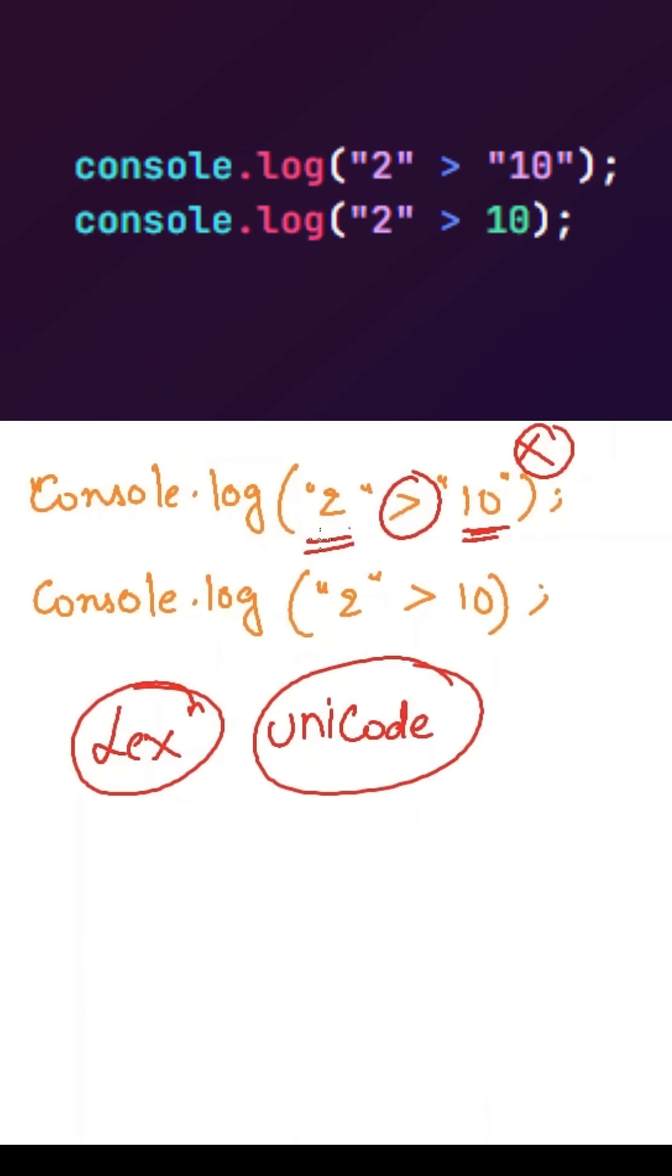So, the first character in this string will be 2. The first character in this string will be 1. So, 2 is converted into the unicode value that is 50. 1 is converted into the unicode value that is 49. As 50 is greater than 49, it will return true.